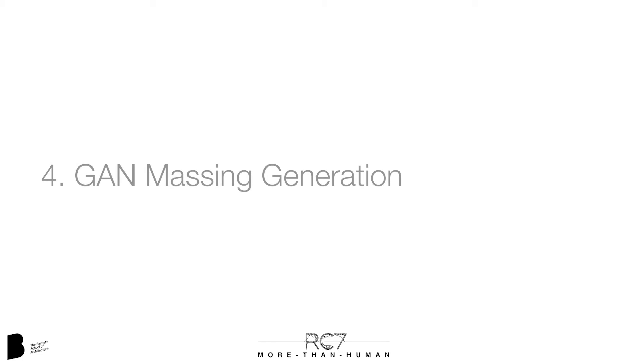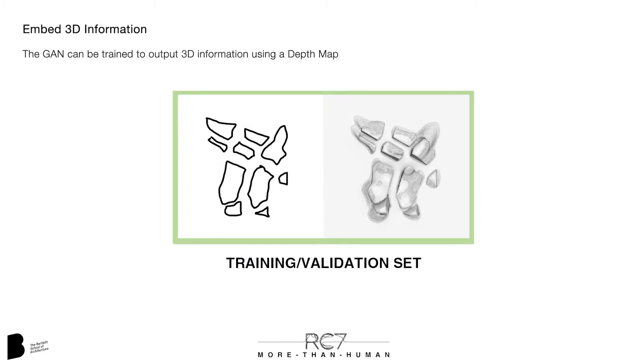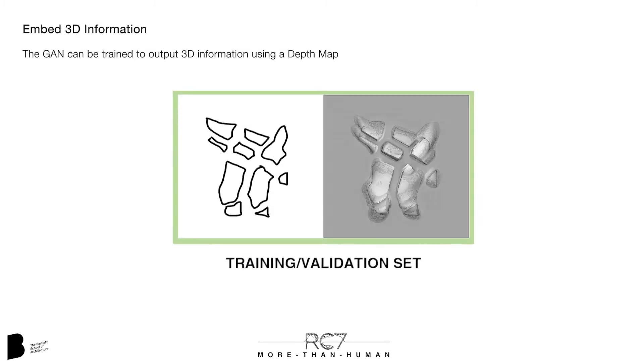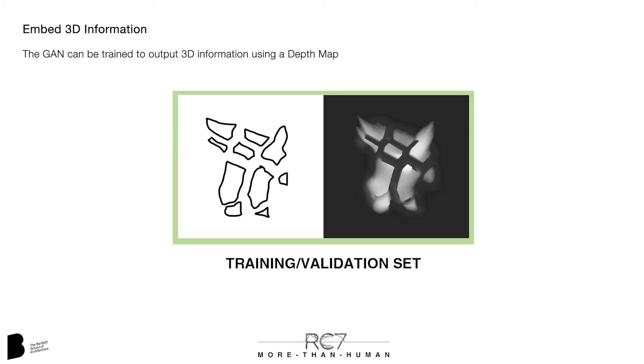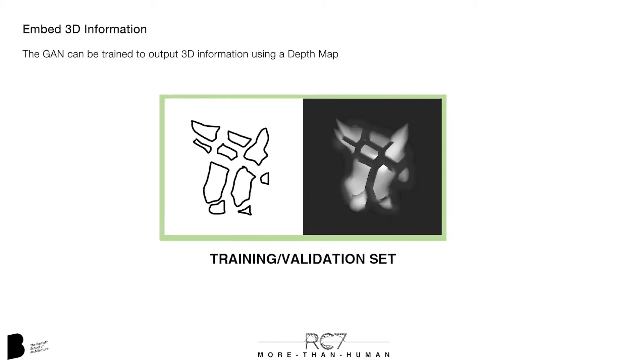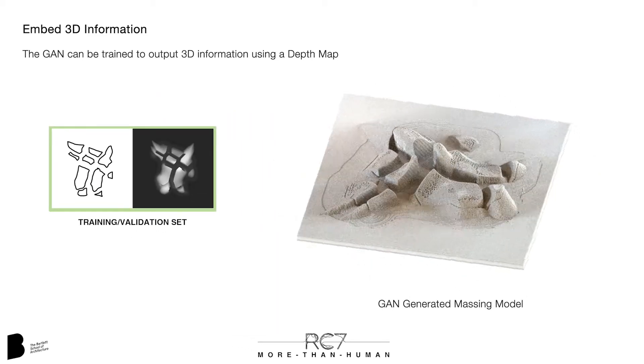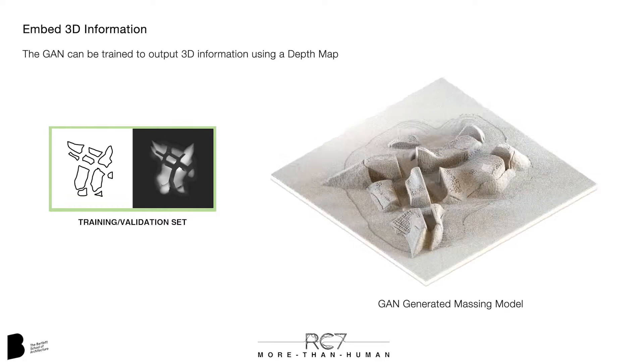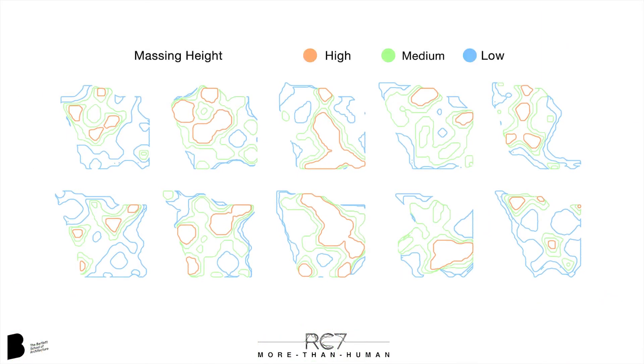When training a GAN with 3D datasets such as this one, we can embed 3D information using a depth map as the output image. This allows for the creation of a massing and zoning model from the generated images. Through our early GAN experiments we found the best way to recreate our PDG datasets was using colored sketch lines to represent heights.